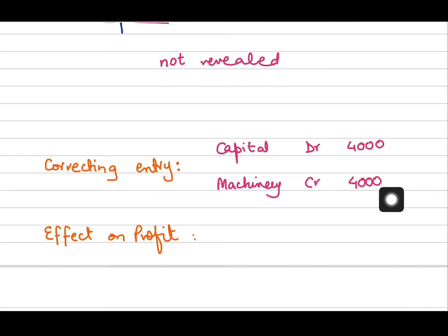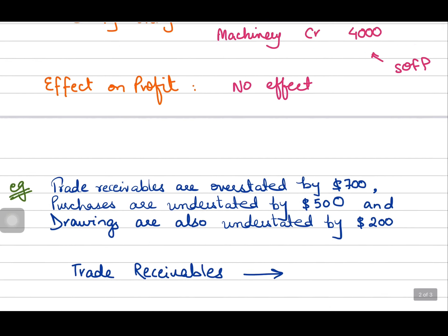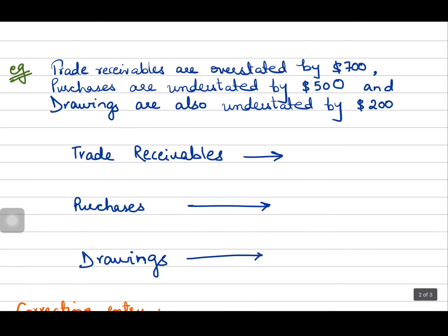Both accounts are not related to each other, however coincidentally the amounts by which both were affected were the same. Now, will this correction affect profit? In this case no — there will be no effect because both of these accounts appear in the statement of financial position and not in the income statement.